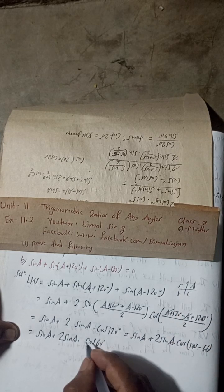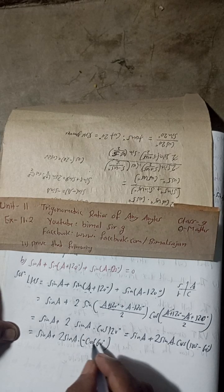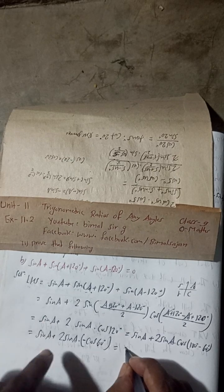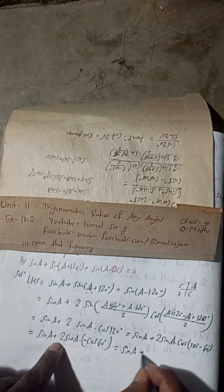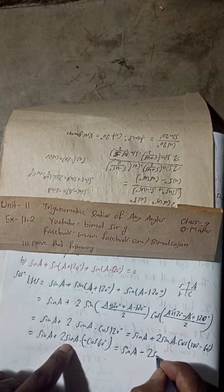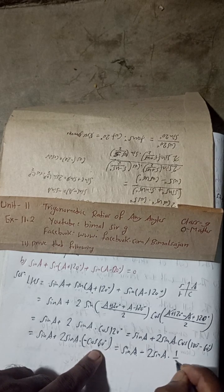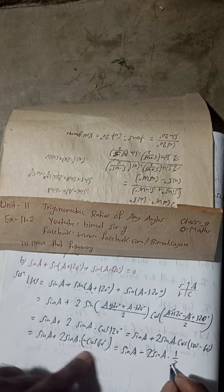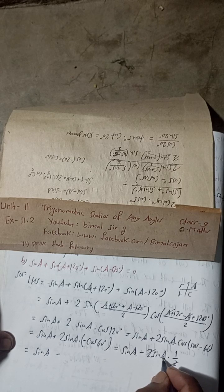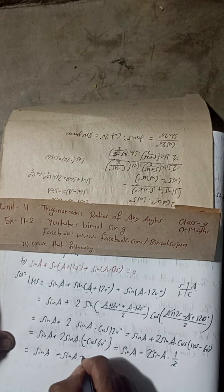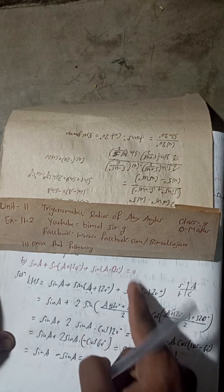The minus sign gives us sin(A) − 2 sin(A) × cos(60°). The value of cos(60°) is 1/2, so 2 × 1/2 = 1, meaning 2 sin(A) × cos(60°) = sin(A). Therefore sin(A) − sin(A) = 0, which equals RHS. Hence proved.